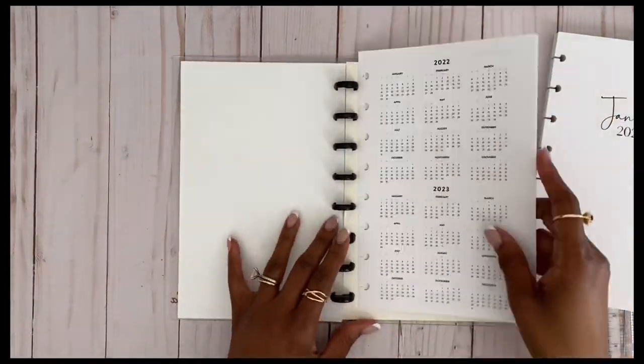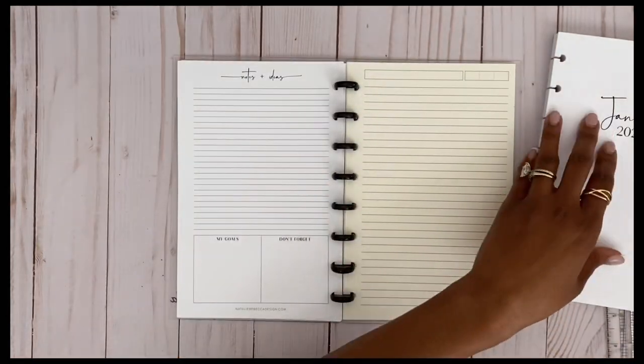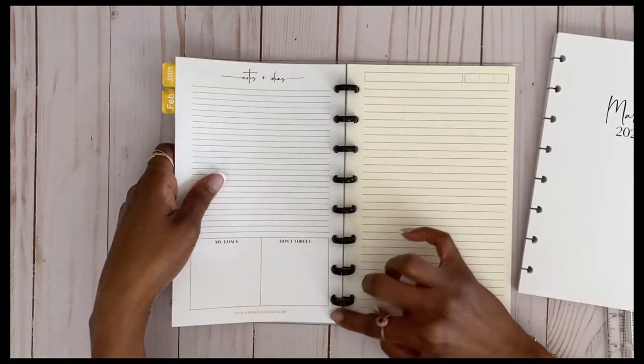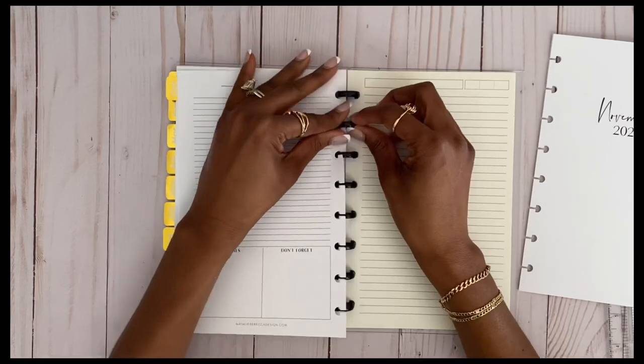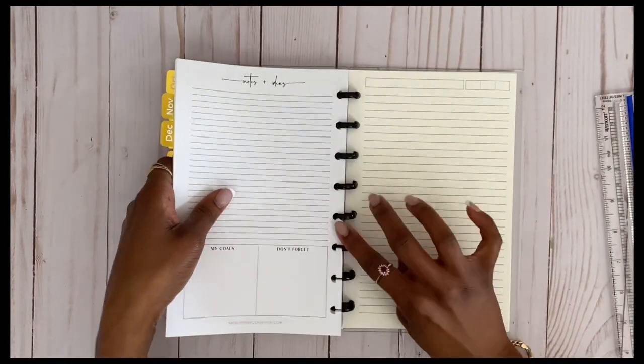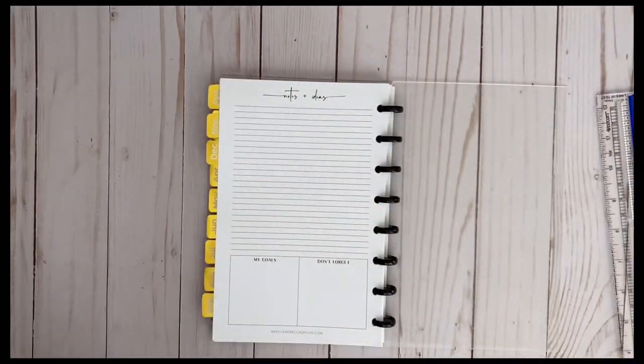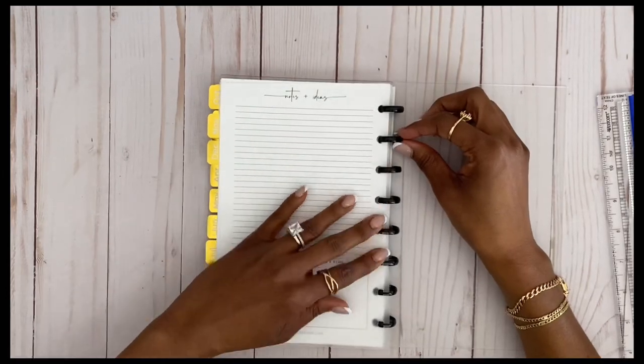I'm going to go ahead and include this year at a glance. It's actually two years at a glance into the planner so that she'll have that as well. I'm putting in the months here as I go. This is very soothing to me, I don't know about anyone else.